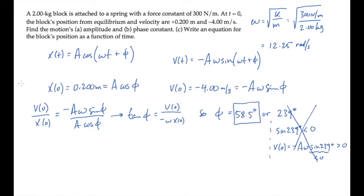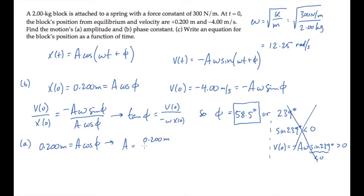That's the answer to part B. Part A asks us for the motion's amplitude, and there are many ways to find it. One way is to use the position at time 0 — it's 0.2 meters — and we know that equals A·cosine(φ). We now know the phase angle φ, so substituting that value shows us that the amplitude is 0.383 meters.